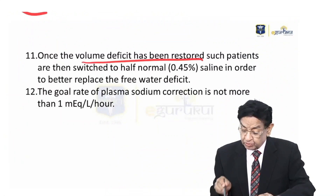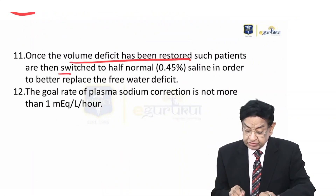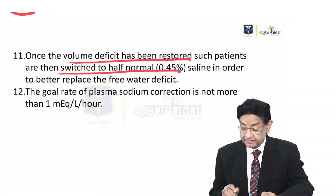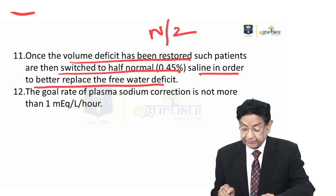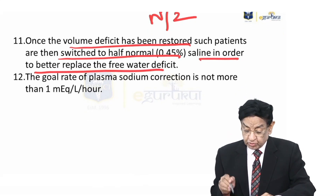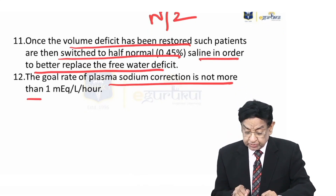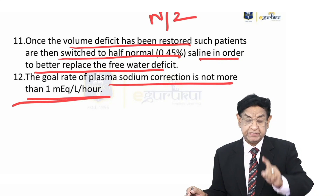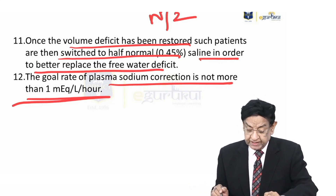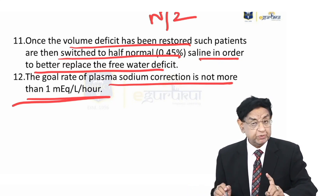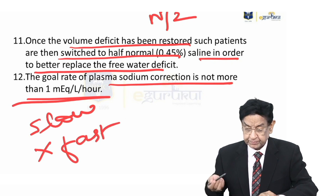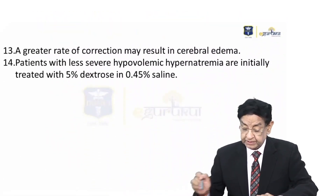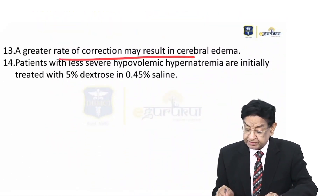Once the volume deficit has been restored, such patients should switch over to half normal saline — N/2 saline — in order to better replace the free water deficit. The goal of sodium correction is not more than 1 milliequivalent per litre per hour; it should be very slow. A greater rate of correction may lead to cerebral edema.